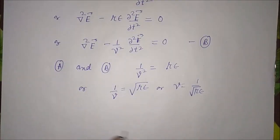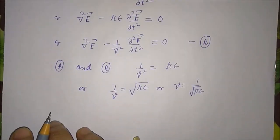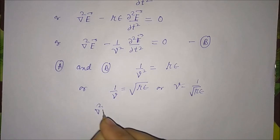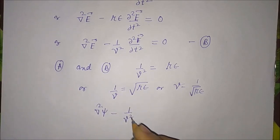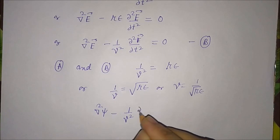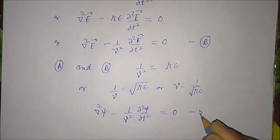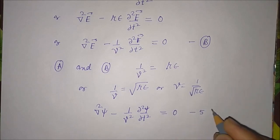We now have a standard wave equation traveling with speed v, given by del squared psi minus (1/v²) ∂²psi/∂t² equal to zero. Let this be equation number 5.